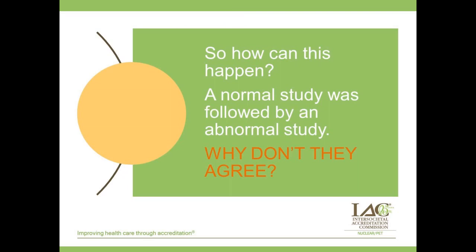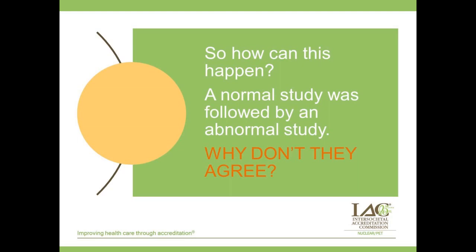Looking at the broader picture, gastric emptying scintigraphy is the reference, or gold standard test, to measure gastric motility. However, there are very many variables that can influence test results — patient preparation like withholding appropriate drugs, meal composition and amount, the type of study acquisition, how processing is done, how we analyze the study, and how we choose the normal values. It was recognized as far back as 2007–2008 that there was very much a lack of standardization of the methodology.